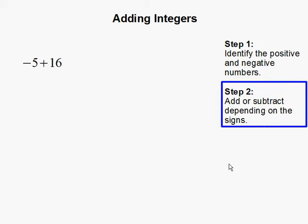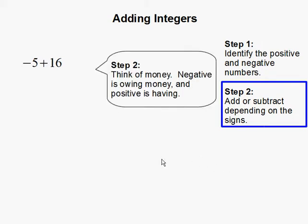Step 2: Add or subtract depending on the signs. An easy way to do this is to think of money. Negative is owing money, and positive is having.